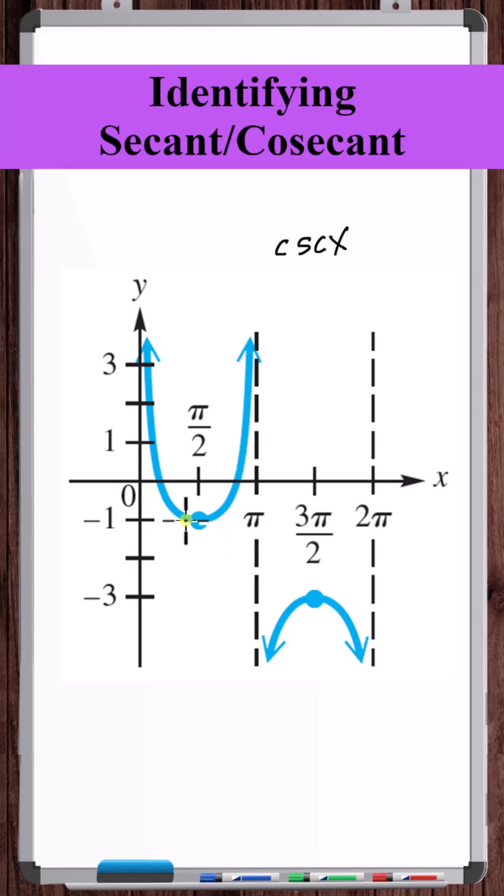For standard cosecant, this would be at positive 1, and this would be at negative 1. But what's causing that, we can see, is not a vertical stretch or shrink. It's a vertical shift down by 2. So here's the equation of this cosecant function.